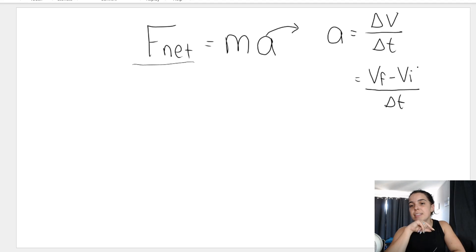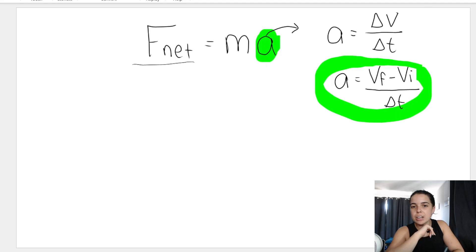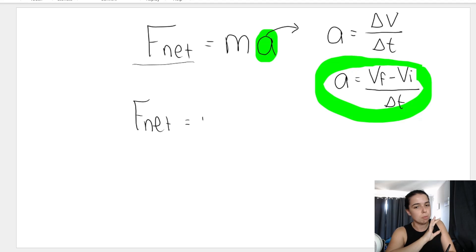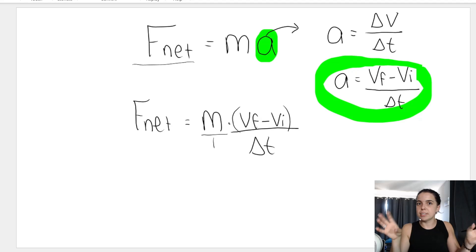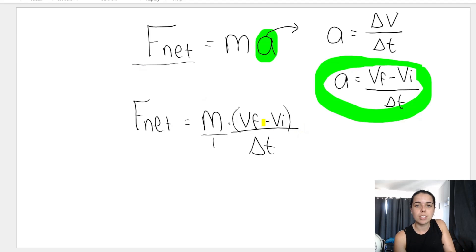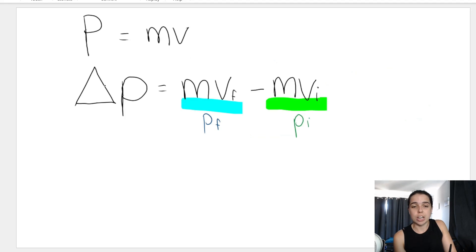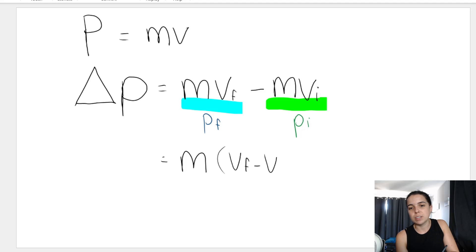We divide that change in velocity by time to get acceleration. So if I take F_net equals ma and replace acceleration with all of that, the formula becomes F_net equals m multiplied by (vf minus vi) divided by delta t. Do you see anything we learned yesterday jumping out at you? What about mvf minus mvi — did we not learn that yesterday? Remember, change in momentum is mvf minus mvi, and if you take mass as a common factor you're left with m times (vf minus vi).